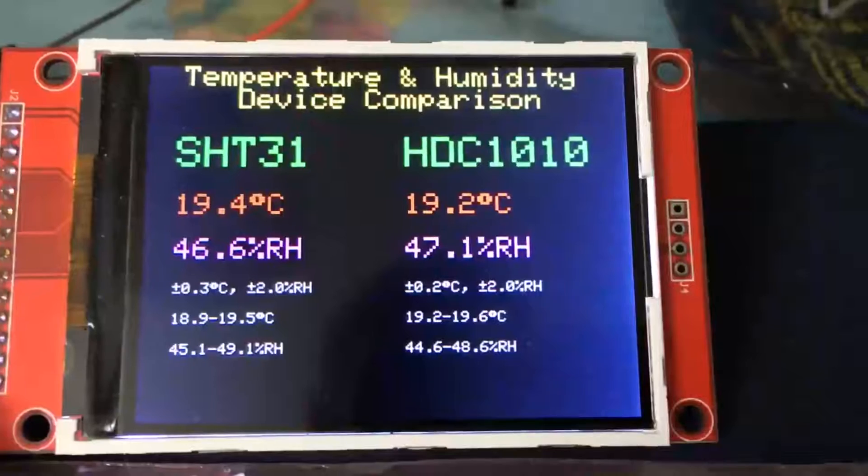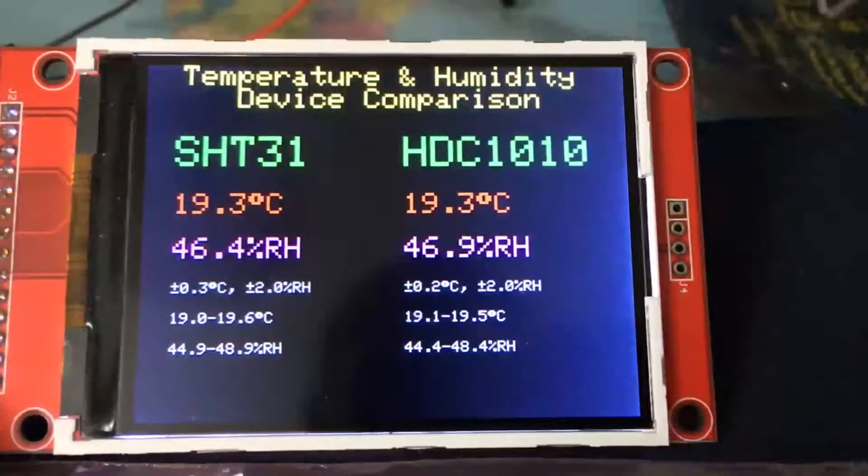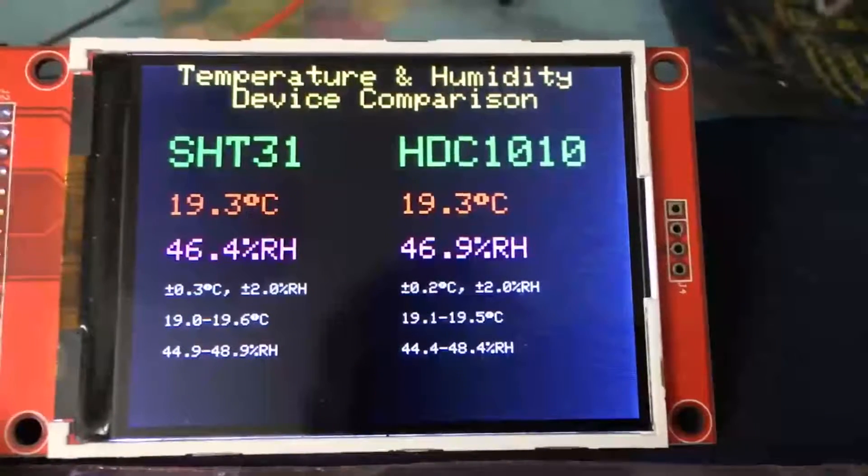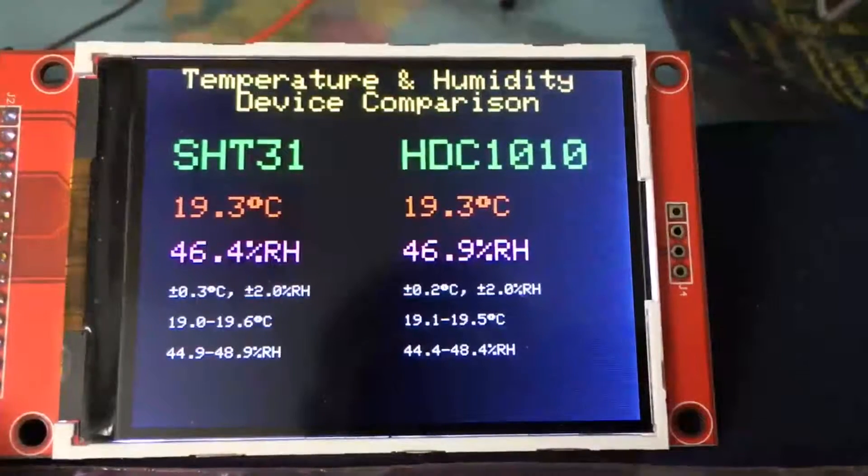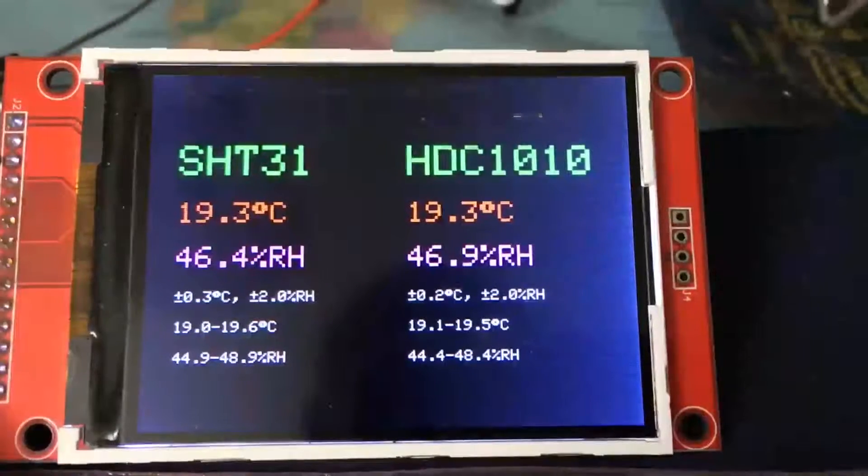In terms of the readings below you'll see that I've done 19 to 19.6, 49.9 to 48.9. Those readings put a tolerance on the HDC1010 and on the other side of the display.